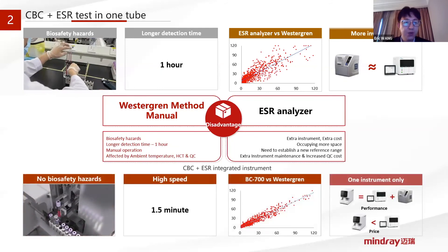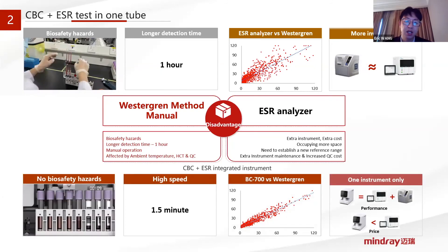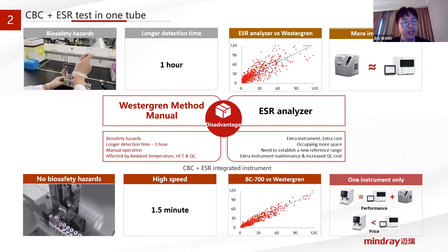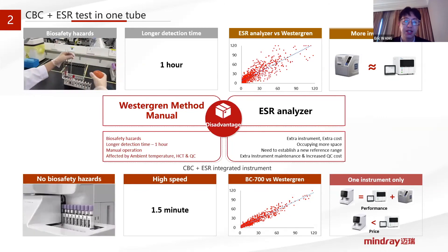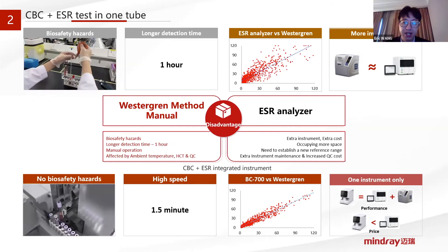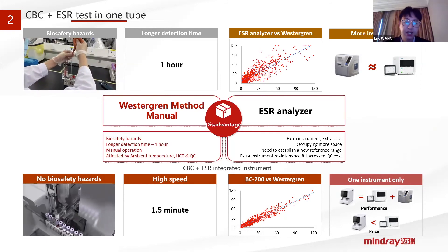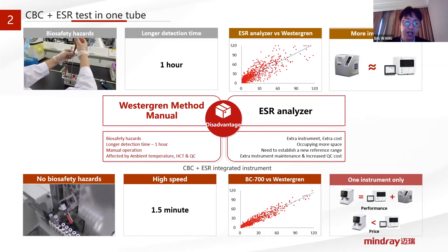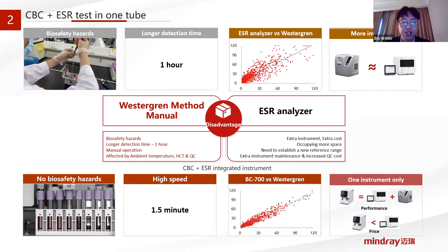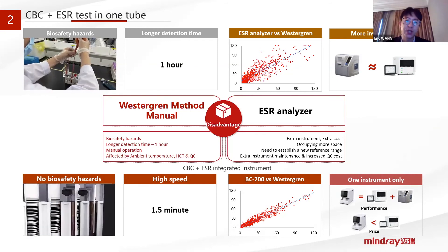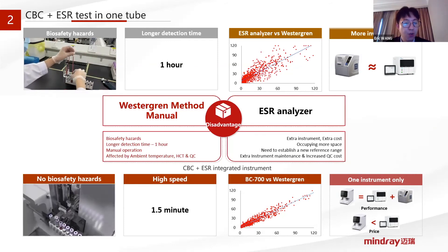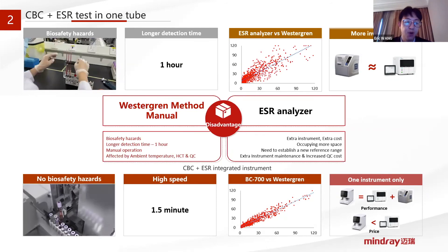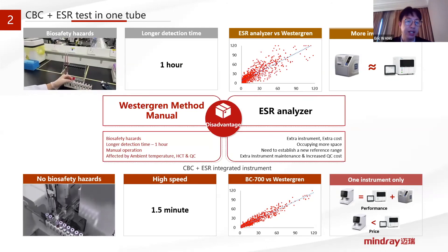Now the BC700 series offers you an all-in-one solution. We can use less blood from patients — especially for pediatric and other patients — only around 150 microliters. Additionally, technicians do not have to wait an hour for results. It only takes one and a half minutes to get results for both CBC and ESR tests in one run.